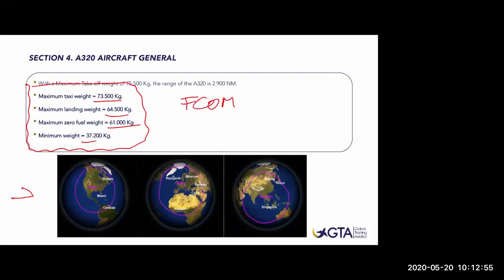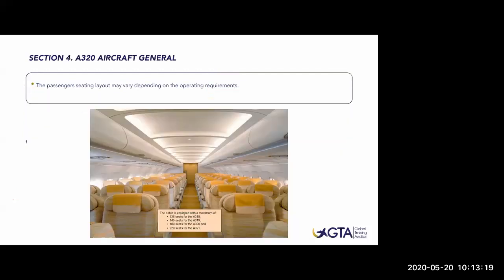The drawings below are very visual - they show the range of the aircraft, which is roughly 2,900 nautical miles. It will depend on payload and many factors, but that's the basis of the range. The passenger seat layout may vary depending on operating requirements. The cabin shown here is an old-fashioned one - you can see how big the seats are. Today we use the thinnest seats ever because they are lighter and occupy less space, fitting more people on the aircraft for greater profitability.